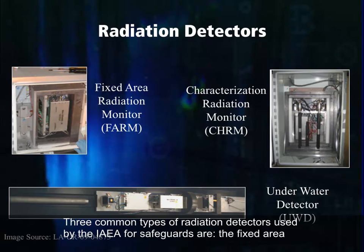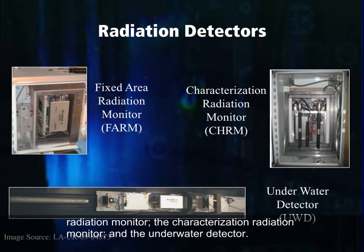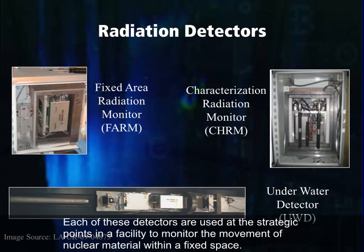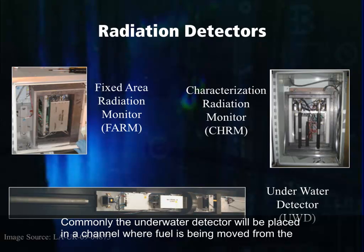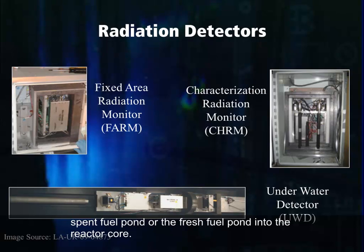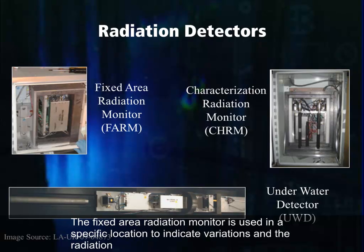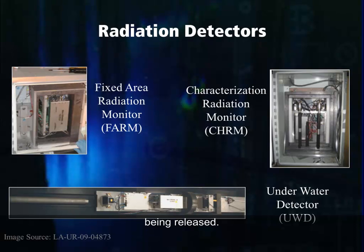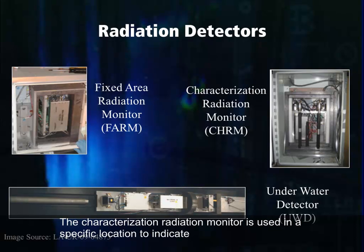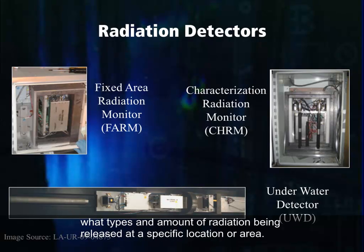Three common types of radiation detectors used by the IAEA for safeguards are the fixed area radiation monitor, the characterization radiation monitor, and the underwater detector. Each of these detectors are used at strategic points in a facility to monitor the movement of nuclear material within a fixed space. Commonly, the underwater detector will be placed in a channel where fuel is being moved from the spent fuel pond or the fresh fuel pond into the reactor core. The fixed area radiation monitor is used in a specific location to indicate variations in the radiation being released. The characterization radiation monitor is used in a specific location to indicate what types and amounts of radiation are being released at a specific location or area.